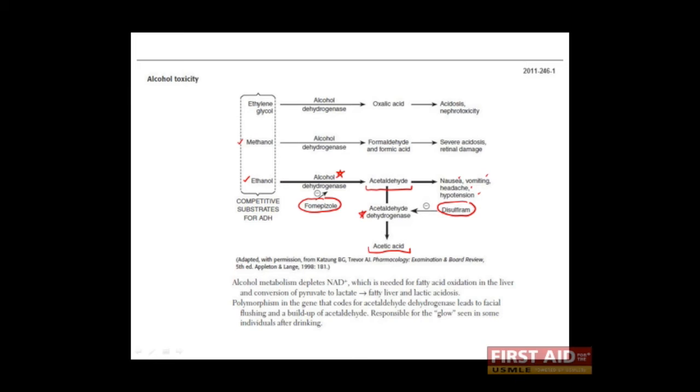Methanol, another alcohol, is similarly metabolized by alcohol dehydrogenase, but the product from this reaction is formaldehyde and formic acid, which can cause significant retinal damage and blindness, as well as metabolic acidosis.